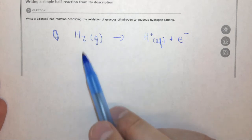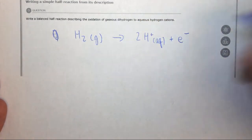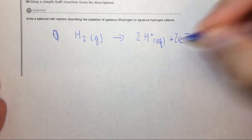Now we simply need to balance it. If we have two hydrogens here we need two H+, and if we have two H+ we need two electrons.